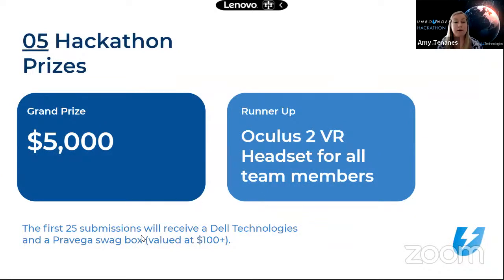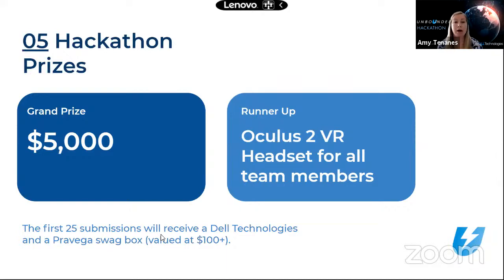For prizes: the first 25 submissions will receive a swag box with Dell Technologies and Pravega swag valued at over $100. The winner gets a $5,000 grand prize shared among the team — teams can be one to five people. The runner-up team members will each receive an Oculus 2 VR headset. Get your submission in early to claim one of those first 25 swag boxes.